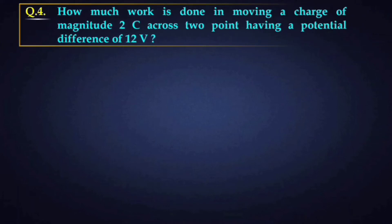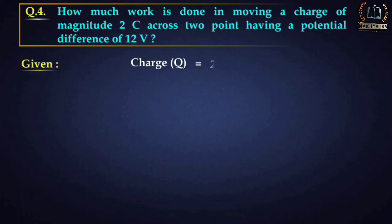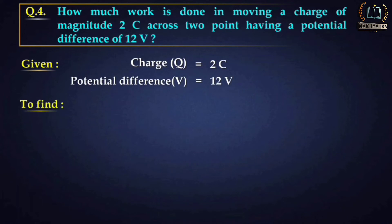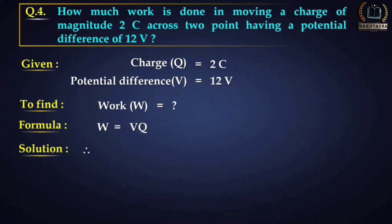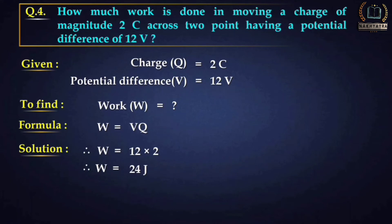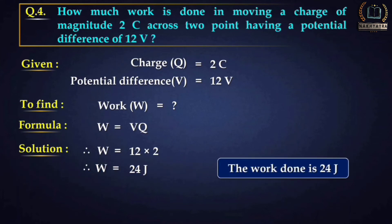Question 4: How much work is done in moving a charge of magnitude 2 Coulombs across two points having a potential difference of 12 volts? Given: Q = 2 C, V = 12 V. Formula: W = V × Q. Putting the values: W = 12 × 2 = 24 joules. The work done is 24 joules.